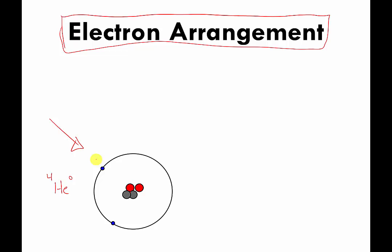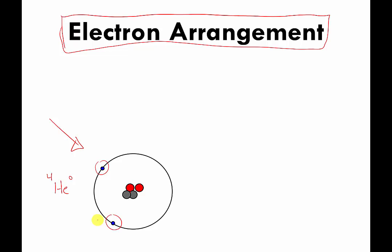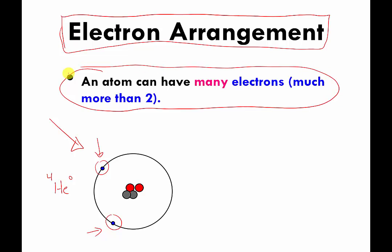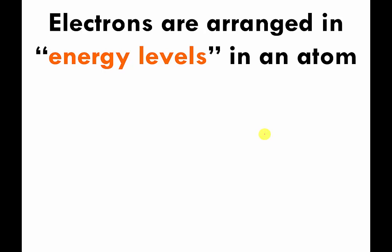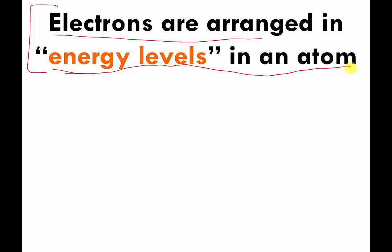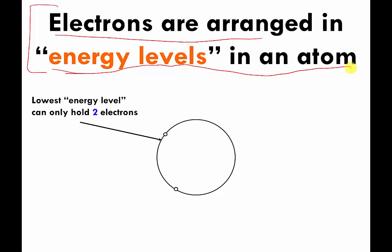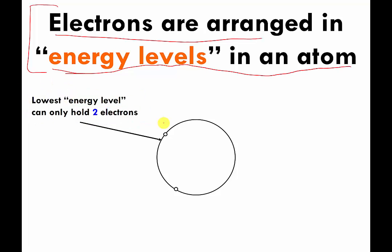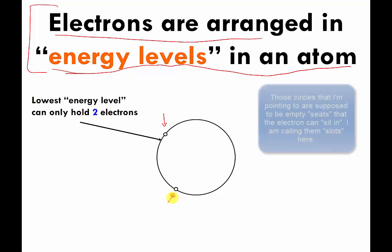What we're going to talk about now is the arrangement or location of these electrons in different atoms. There are many atoms that can have many more than two electrons, so we're going to talk about where those electrons go — how they're arranged. The electrons are arranged in different energy levels in an atom. This is something you're going to have to memorize: the lowest energy level can hold two electrons.